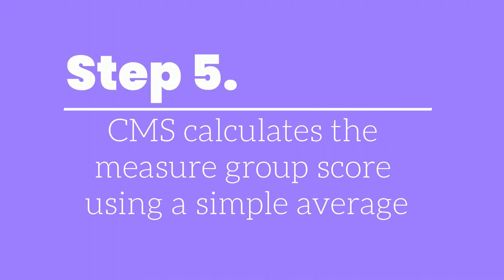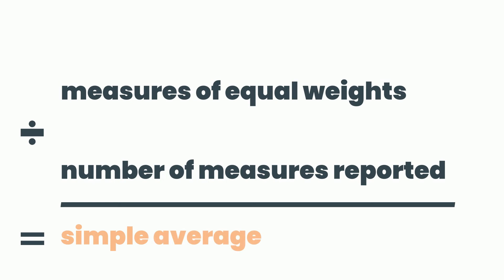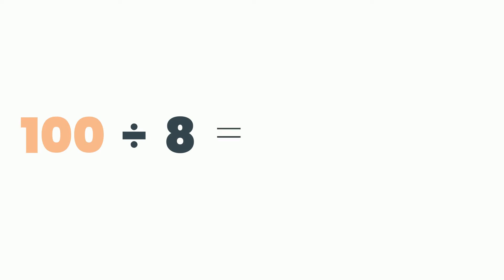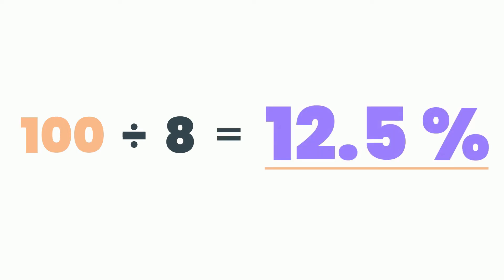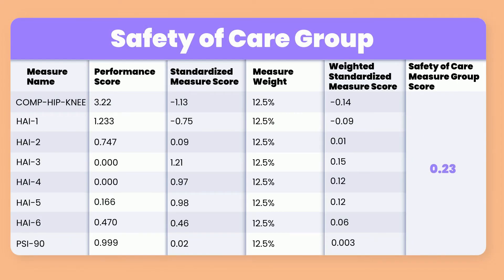In step 5, CMS calculates the measure group score using a simple average. A simple average takes the sum of measures with equal weights and divides by the number of measures a hospital reports. For example, there are 8 measures in the Safety of Care group. If a hospital reports all 8 measures, 100 divided by 8 is 12.5, so each of the 8 measures in this category would be worth 12.5 percent of the overall Safety of Care category score. In the example you see on screen, you can see the measure performance rate, followed by the standardized measure score and the measure weight of 12.5 percent. Based on that measure weight, you'll see the weighted standardized measure score. Those are all added to create a total Safety of Care group score.